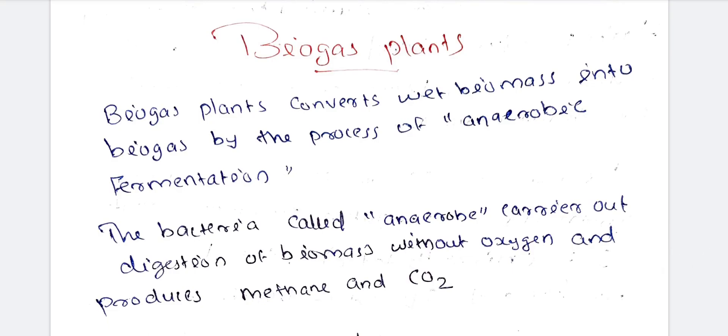Next, biogas plants — this is my final part. I have two topics in this video: biogas plants and their advantages and disadvantages, which we are discussing. Biogas plants convert wet biomass into biogas by the process of anaerobic fermentation.